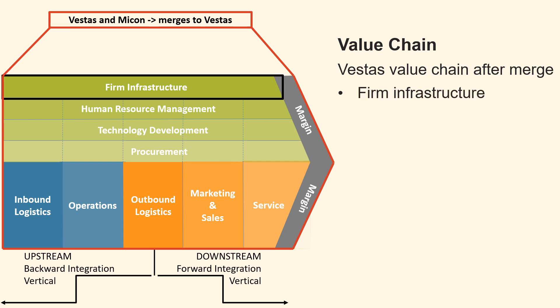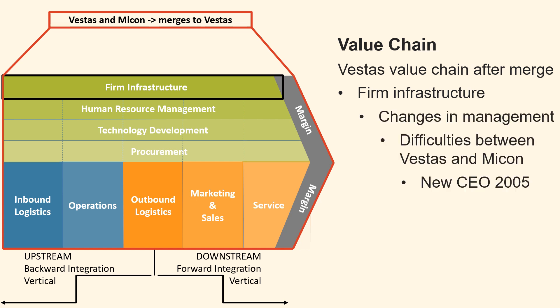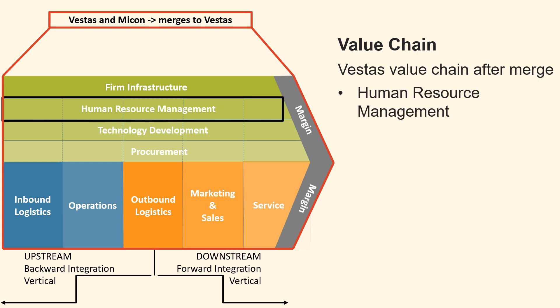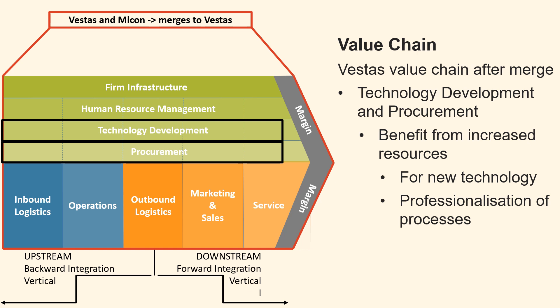The first of the four support activities is firm infrastructure. Organisational mergers often result in management changes; difficulties in cooperation between Vestas and Micon necessitated a management shift, prompting the board to appoint a new CEO in 2005. The second support activity is human resource management: a larger organisation and more employees affect the entire organisation and HR function. The third and fourth support activities, technology development and procurement, benefit from a more prominent firm's increased resources for new technology and the professionalisation of the procurement process.